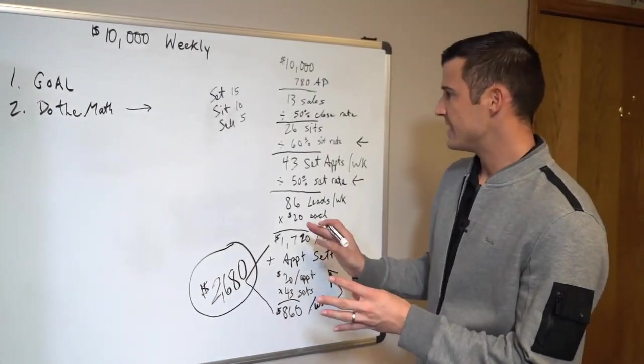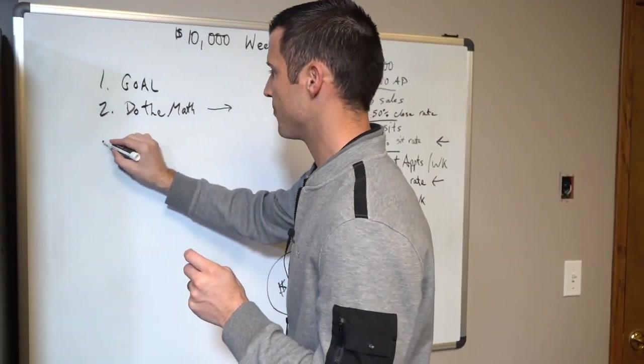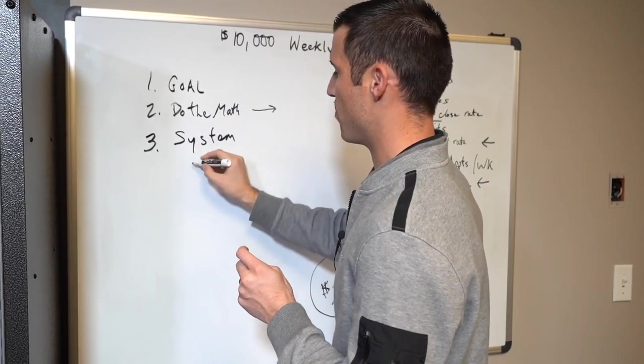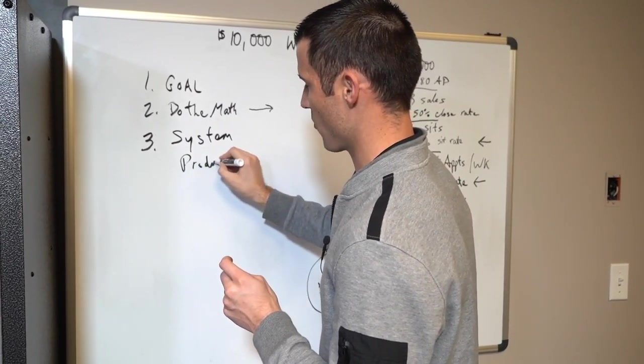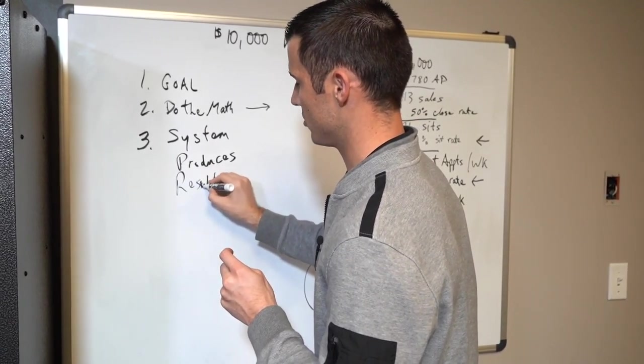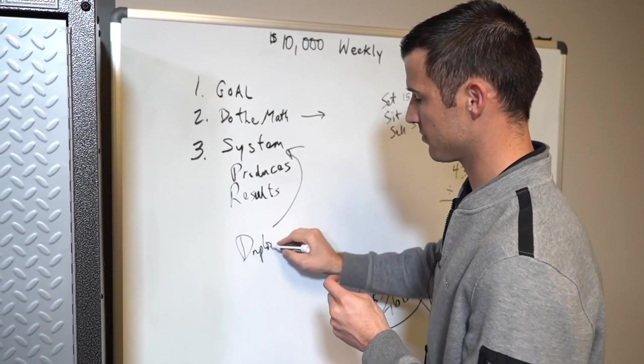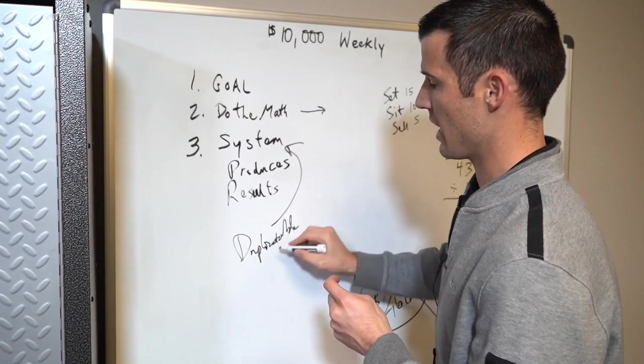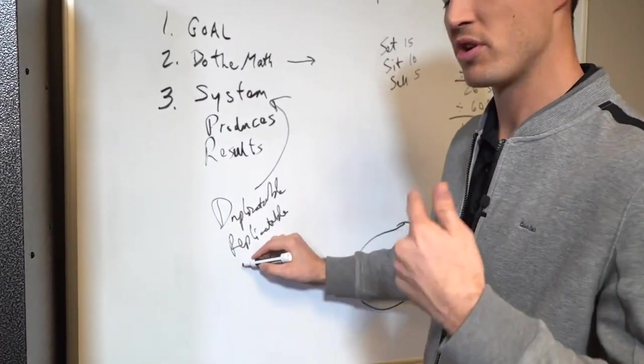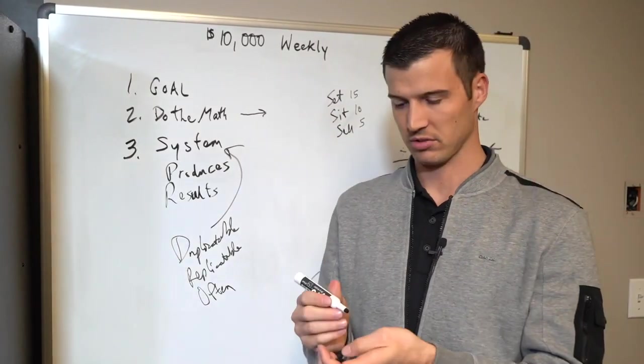So let's look at this - $2,680 real dollars every single week. This is where agents that are writing $10,000 weekly, what's happening is they're walking into a system that produces certain results. Because a system is duplicatable, a system is replicatable, and a system is something that you can do often and continually every single week for an entire year.